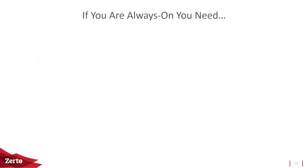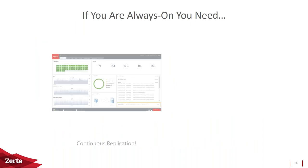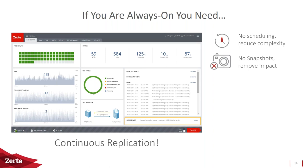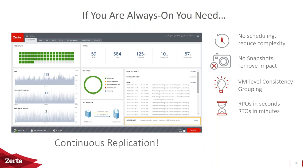If you always want to be protected constantly, you need continuous replication. With Zerto, you don't schedule anything — you protect your VMs, they do an initial sync or delta sync, then replication continues block by block, continuously and asynchronously — just a couple of seconds behind production. You're never worried about when schedules run. There's no impact on protected VMs even with a thousand recovery points per VM. There's no stunning of VMs and no intercepting of data before it writes to storage. You get RPOs in seconds and RTOs in minutes.